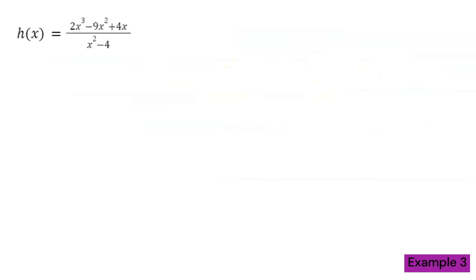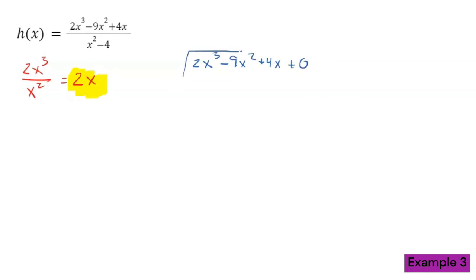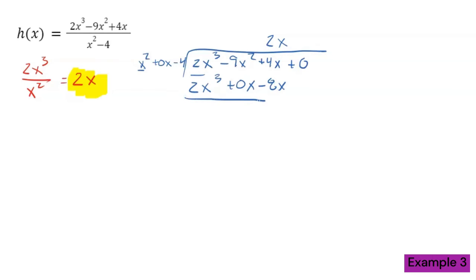Here's another example. I'm going in saying I don't even know if I have a slant asymptote, so I divide my leading terms and see what happens. When I divide my leading terms, I get two x. Again, two really important things: first, it's a polynomial, which means I do not have a horizontal asymptote; second, it's a linear polynomial — the red flashing lights telling you that you do have a slant asymptote. To find it, I perform polynomial long division. I'm going to take two x cubed minus nine x squared plus four x, plus zero as a filler, and divide by x squared plus zero x minus four — with a filler there as well.